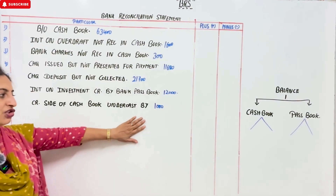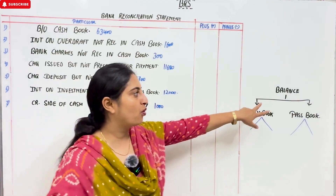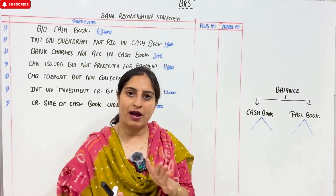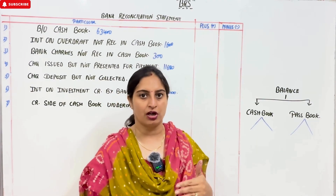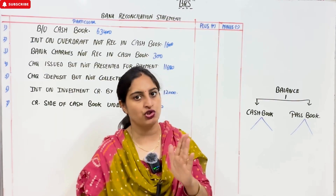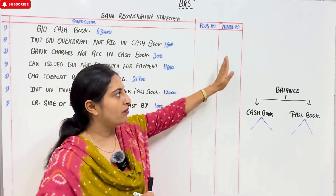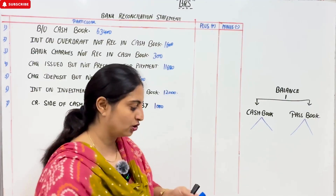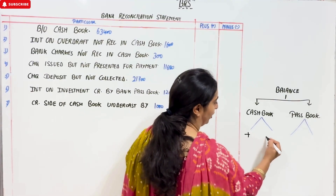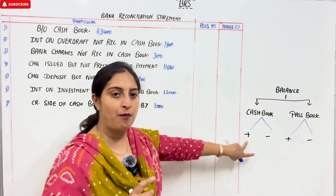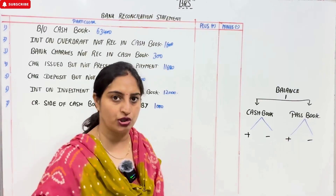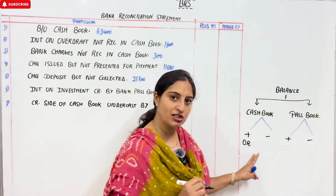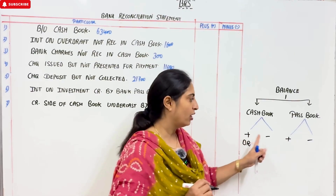I have told you that whenever you make a question, first of all you have to check the balance — you have to start with positive columns or minus columns. If you see this question in the book and the rest of the questions from the last illustration, both have a different concept, but we are doing all the questions from the same concept. We are making a plus column and a minus column. You have to remember one thing: the two books are positive and negative. The cash book is positive and negative. If this is positive, which is positive?